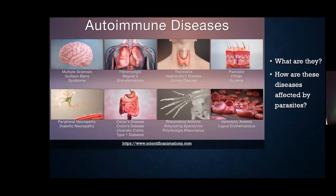Autoimmune diseases — what exactly are they? They are the result of your immune system not being able to distinguish the difference between pathogens and antigens that you make in your own body. As a result, the body attacks itself. How exactly do parasites play a role in autoimmune diseases?